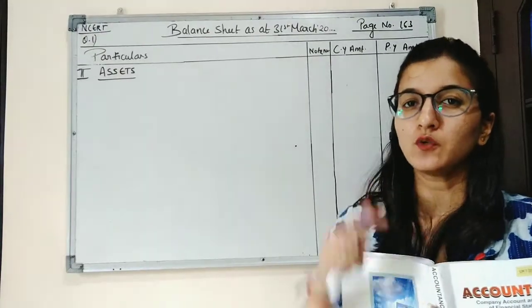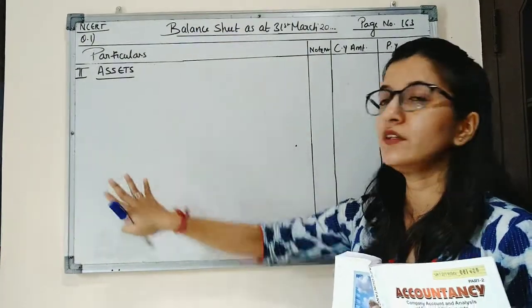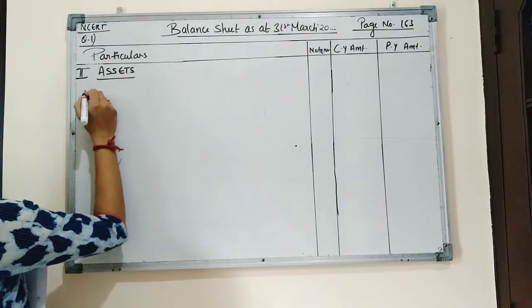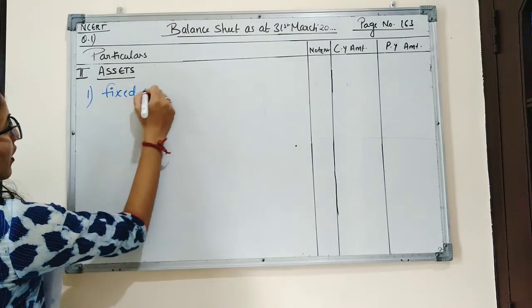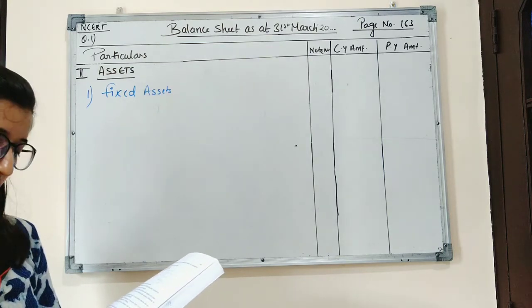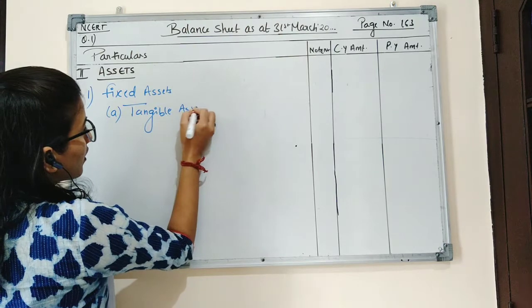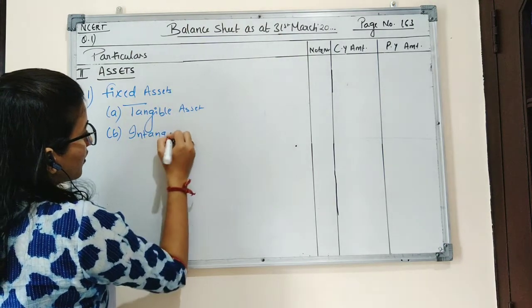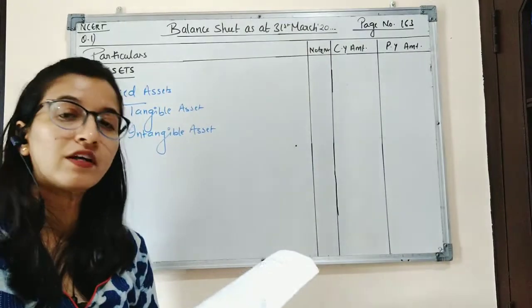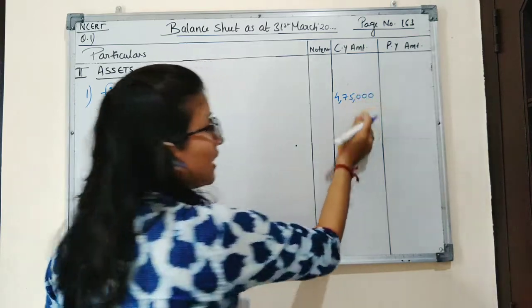In the balance sheet there are two major headings: first is equity and liabilities, and second is assets. We have recorded equity and liabilities. Now in assets there are two parts — first is non-current assets and second is current assets. Under non-current assets there are five sub-parts, but in this question only tangible assets and intangible assets are given. For tangible assets, motor vehicles amounting to ₹4,75,000 are given — motor vehicle is a tangible fixed asset — so we will record ₹4,75,000 in the current year amount.